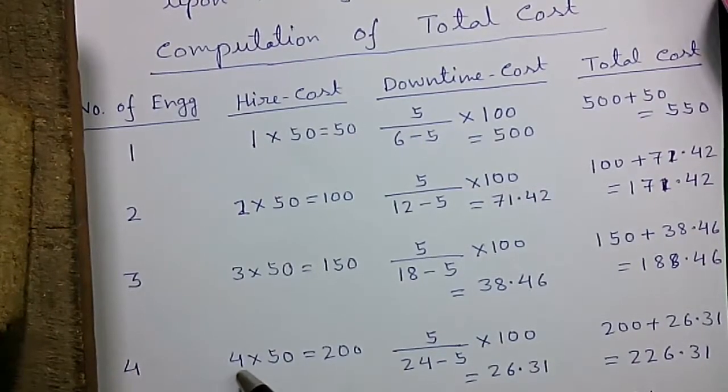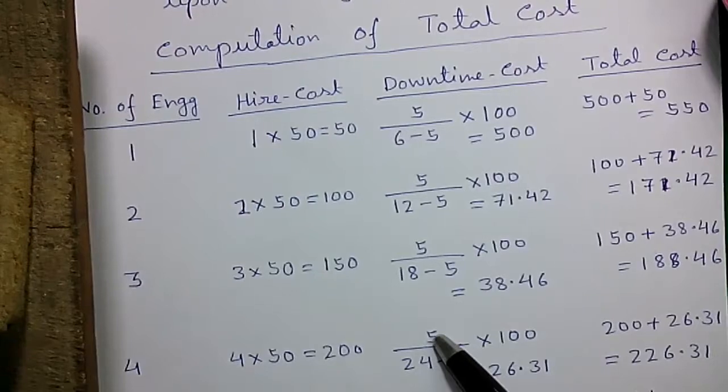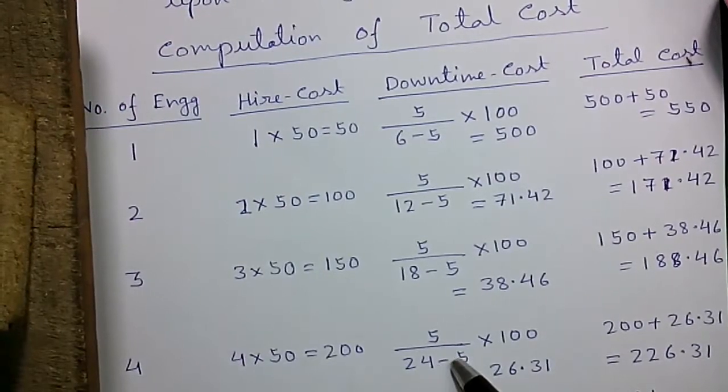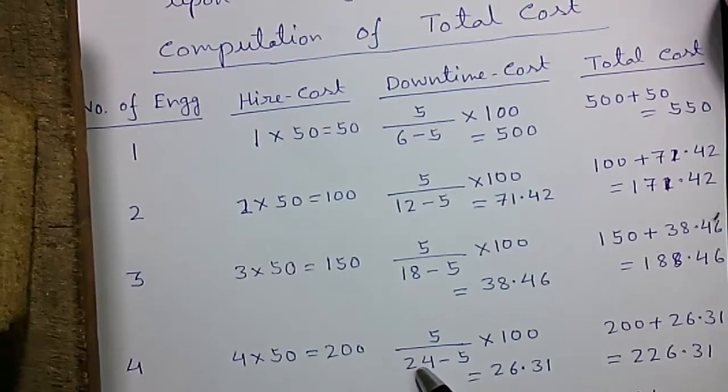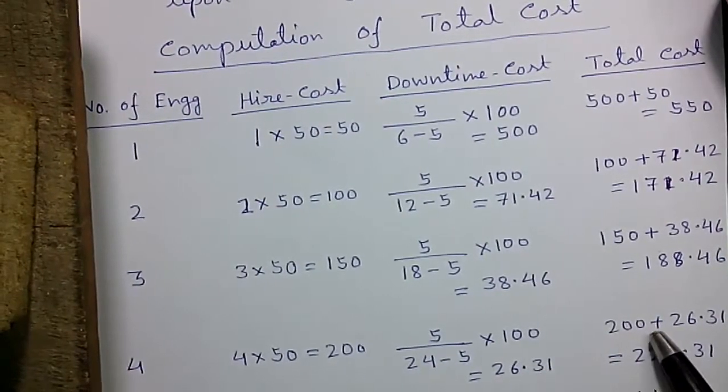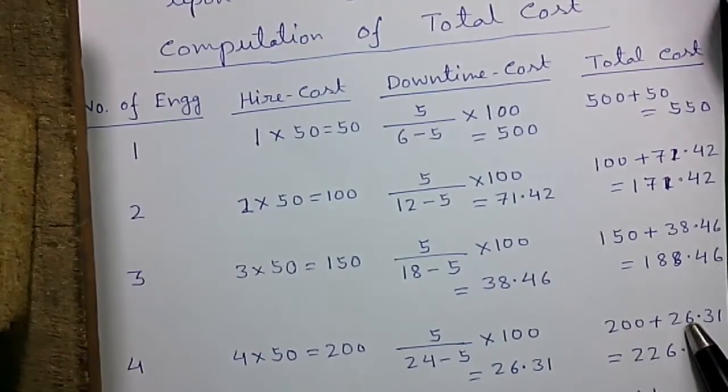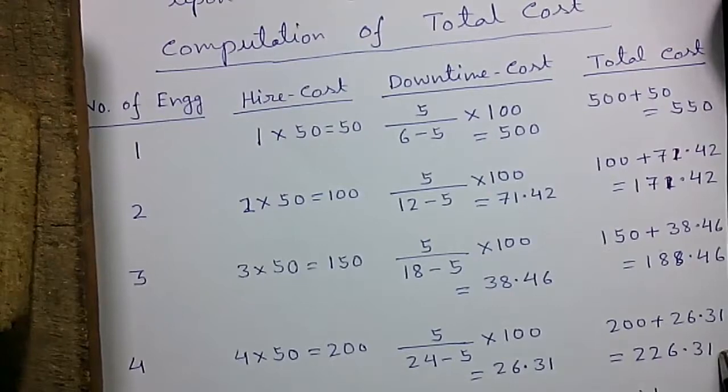And for 4 engineers, the hire cost is Rs 200, and the downtime cost is 5 divided by 24 minus 5, times 100, because 4 engineers can repair 24 servers per hour. That equals 26.31. So the total cost is 200 plus 26.31, that is 226.31.